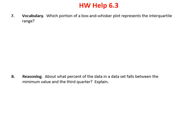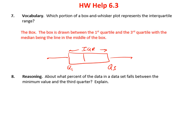Problem 7 asks which portion of a box and whisker plot represents the interquartile range. If I have a box and whisker plot — let me just draw one quickly — this is quartile 1, this is quartile 3, so the IQR goes from there to there. It represents the box — the box drawn between the first quartile and the third quartile. That's the interquartile range.